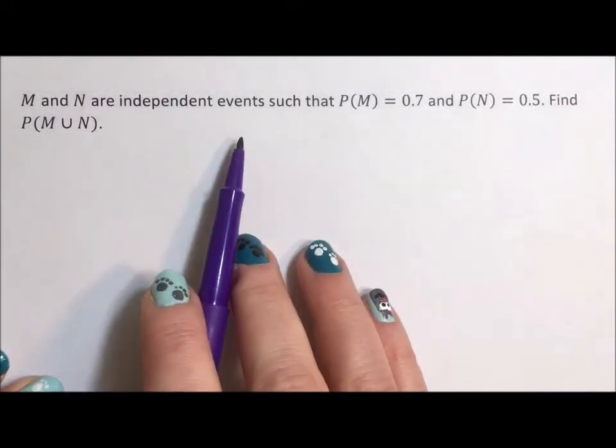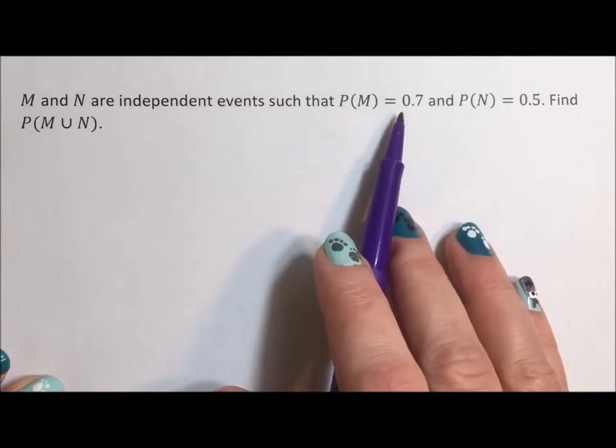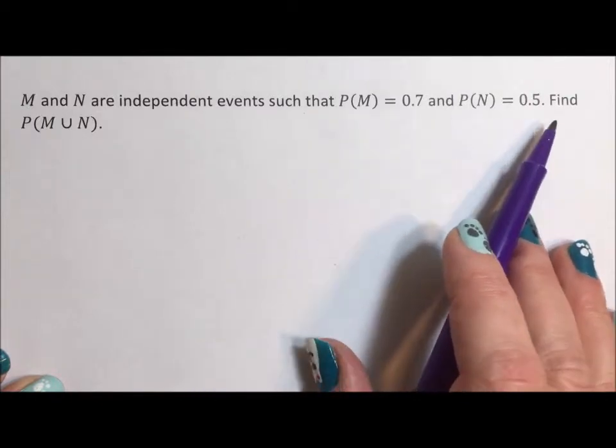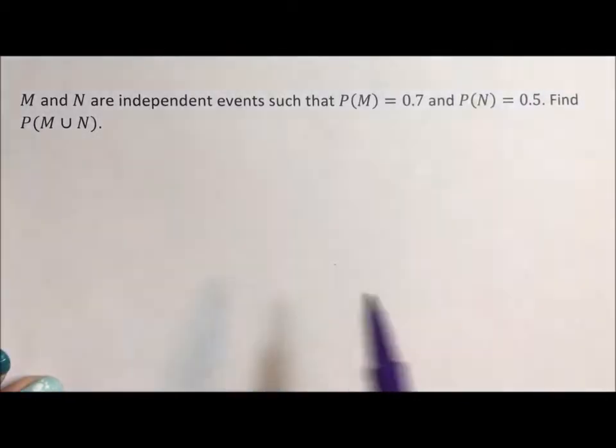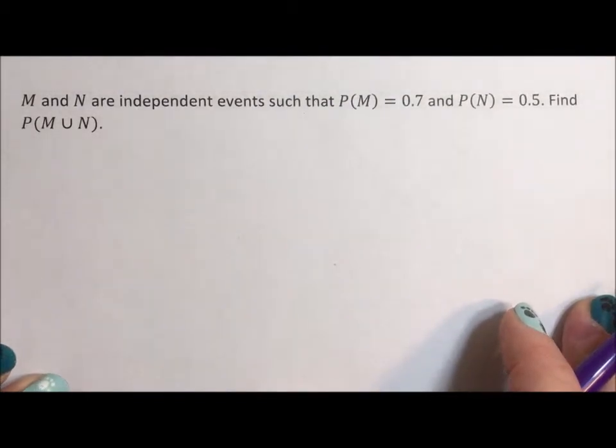M and N are independent events such that the probability of M is 0.7 and the probability of N is 0.5. Find the probability of the union of the two.